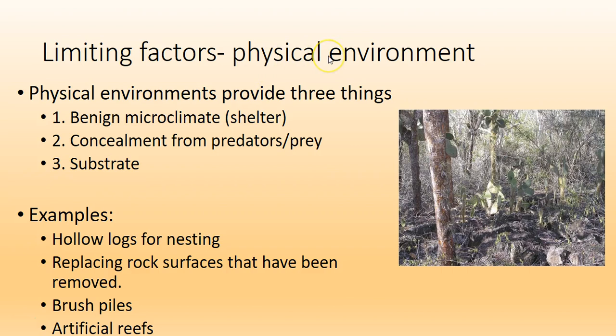Other limiting factors include the physical environment, including a benign microclimate — a shelter where, for example, small cacti grow that wouldn't survive in the open. Concealment from predators and prey matters too — open fields get rodents killed because hawks can find them easily. Substrate is important, as with tortoises needing specific substrate to lay their eggs. Other examples include dead trees, hollow logs as nesting spots, brush piles, and artificial reefs.